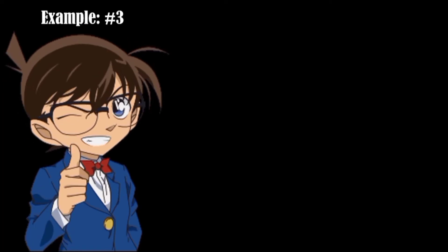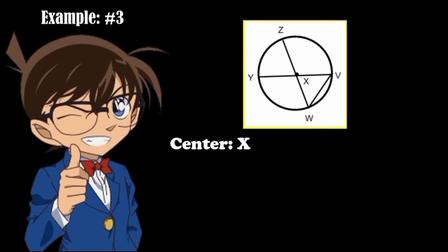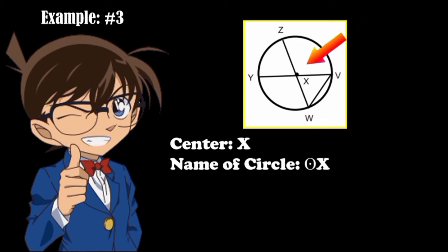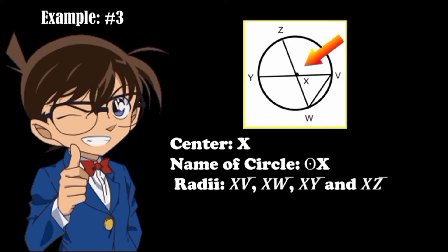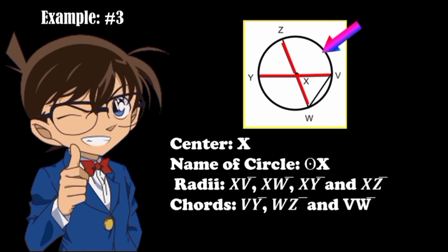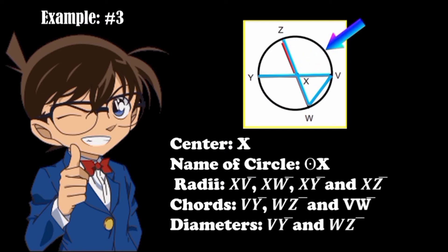Example number three. Look at the illustration. Our center is point X, so the name of the circle is Circle X. We have four radii: line segment XV, line segment XW, line segment XY, and line segment XZ. We have three chords: line segment VY, line segment WZ, and line segment VW. We have two diameters: line segment VY and line segment WZ. As you can see, line segment VW is just a chord — it is not a diameter because it did not pass through the center.